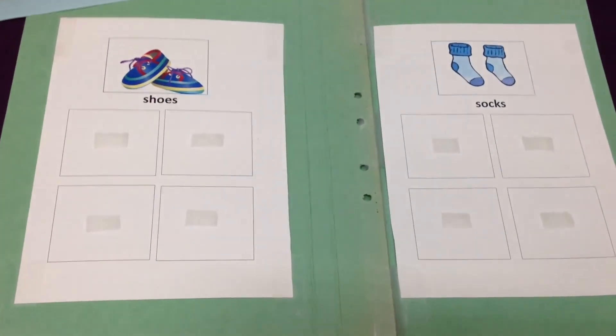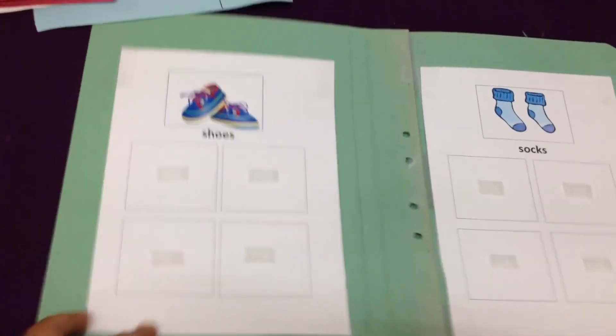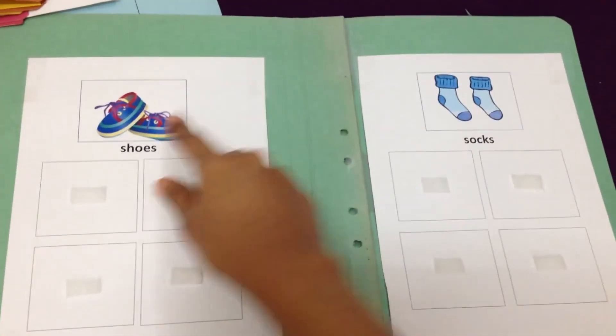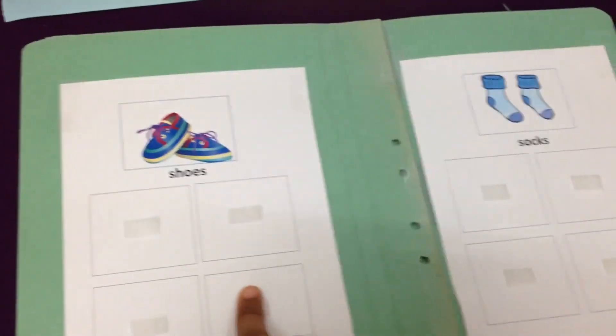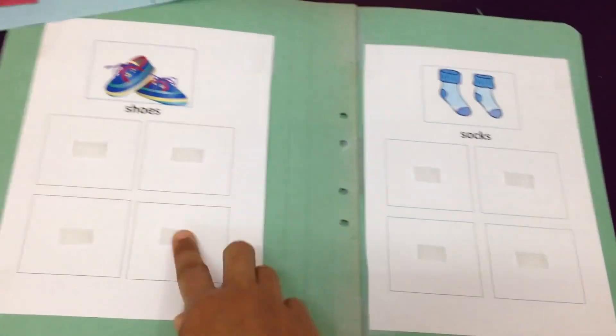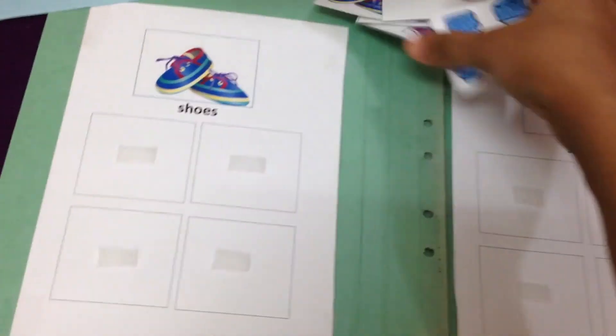I've made this file folder game where he has to sort shoes from socks. I have laminated this, and he has shoes category and socks category. I have put velcro tapes and I give him these cards to sort.